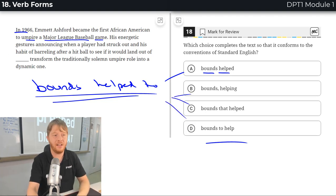You know what the answer is? It's A. Perfectly A. Two is not necessary here. Bounds to help or bounds. Sorry. Bounds helped to or bounds helped are both exactly the same here.